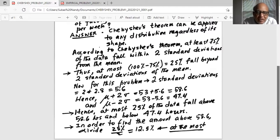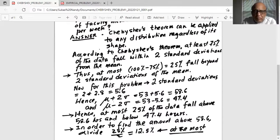Since it is at least 75% in the center, two standard deviations on the left and two standard deviations on the right, what is left on the two edges—that is below 47.4 and above 58.6—is at the most 25%. Then, I divided them into two equal parts. So, above 58.6 is only 12.5% at the most. Now, let's take a look at the empirical rule.